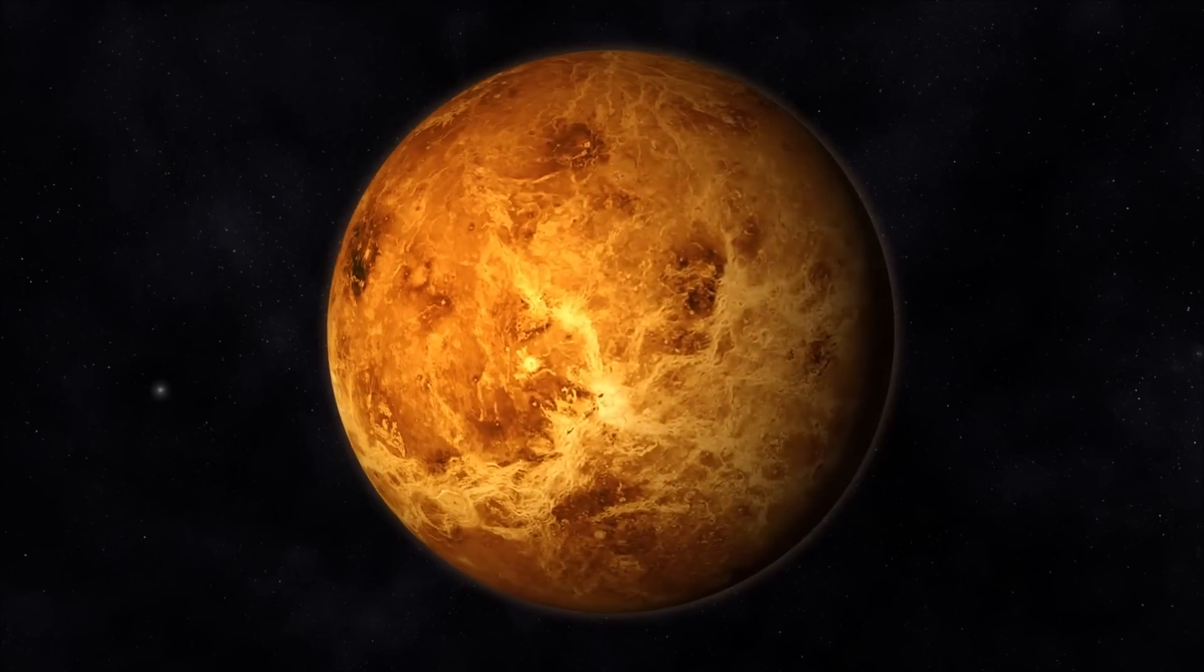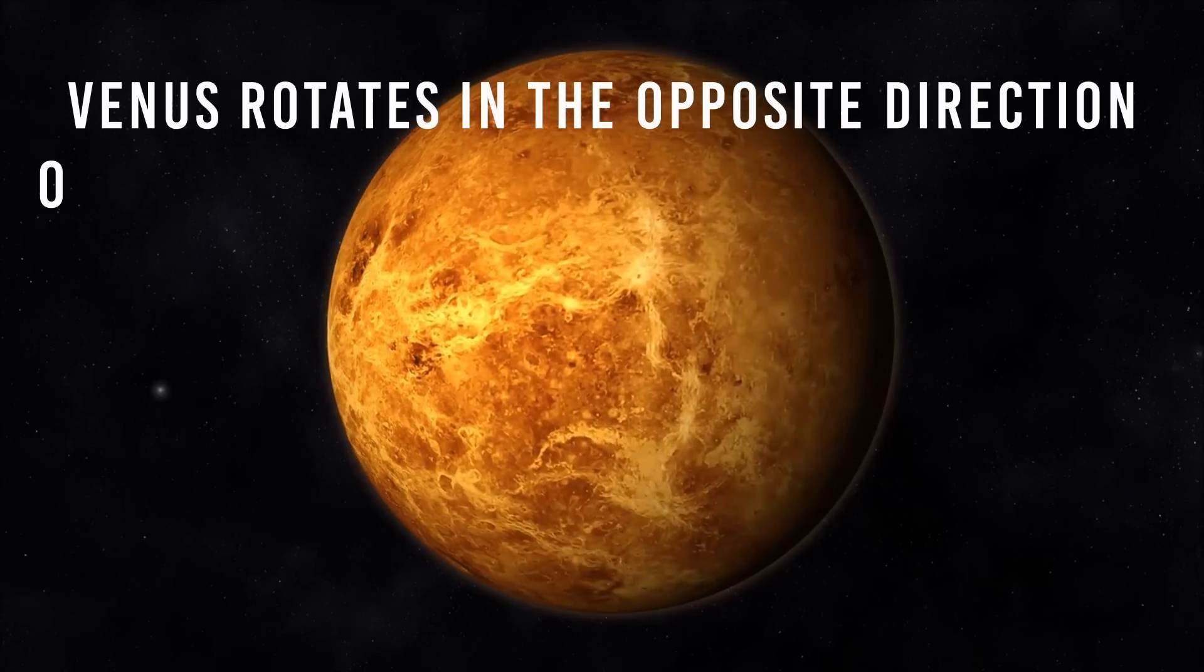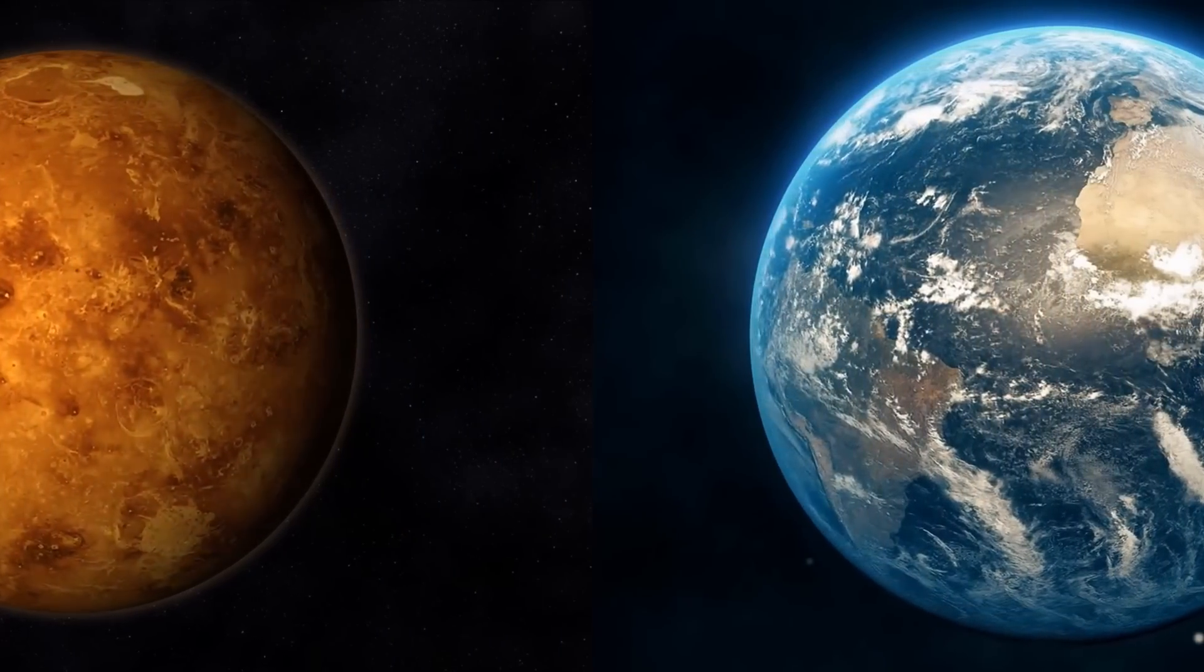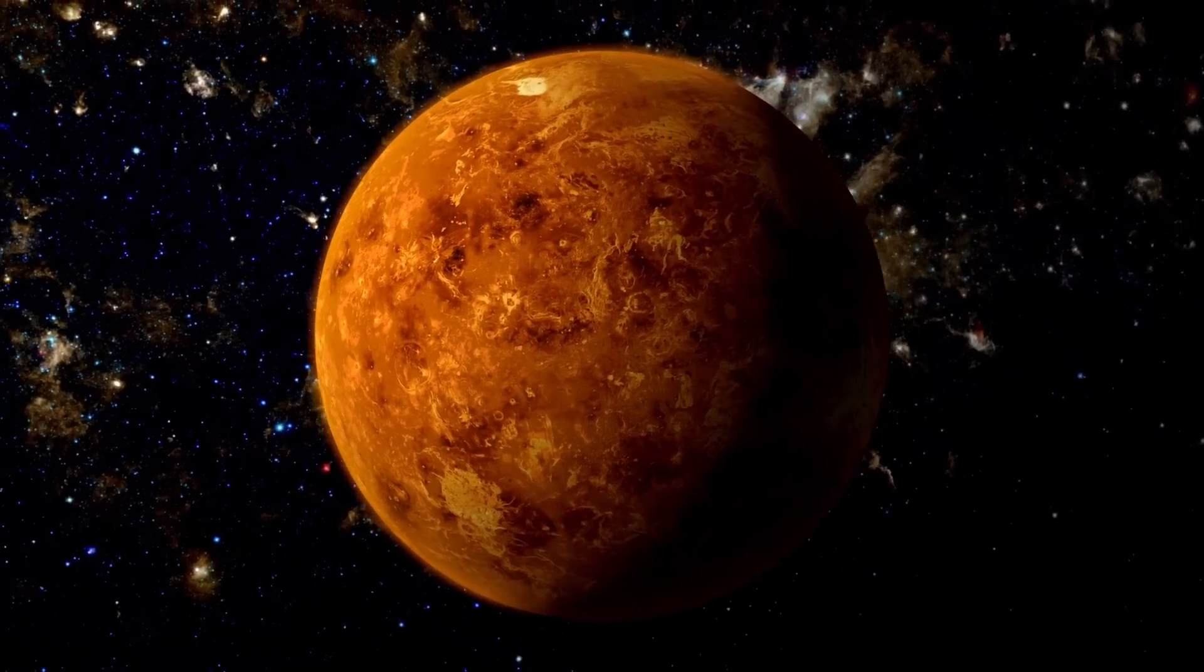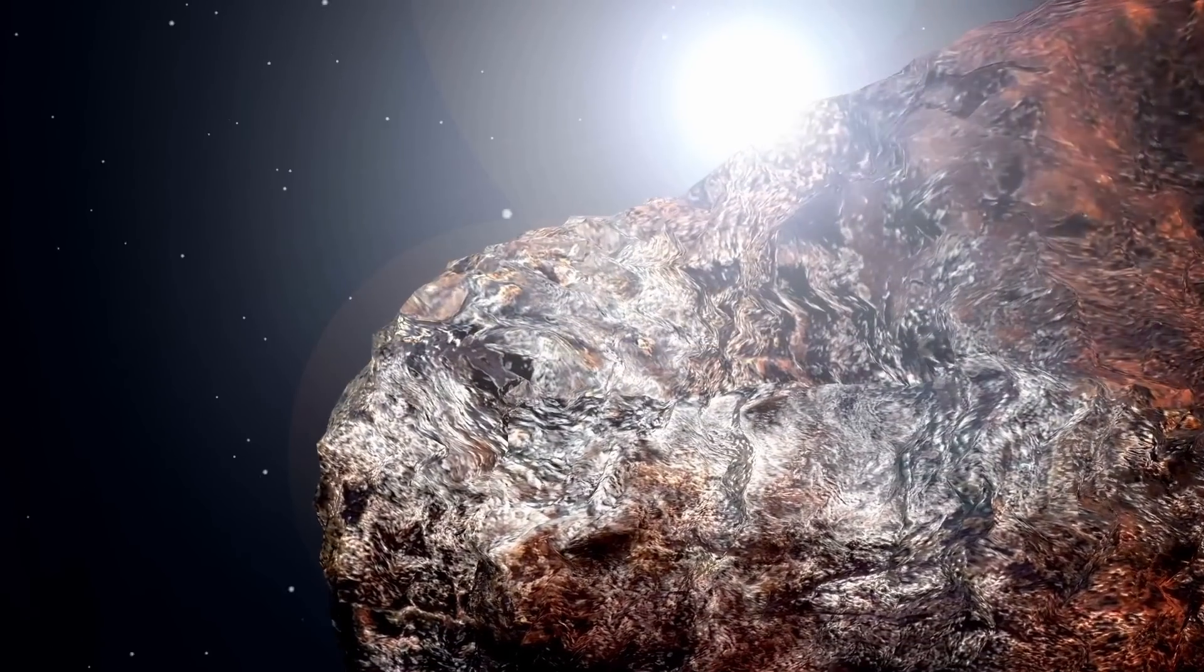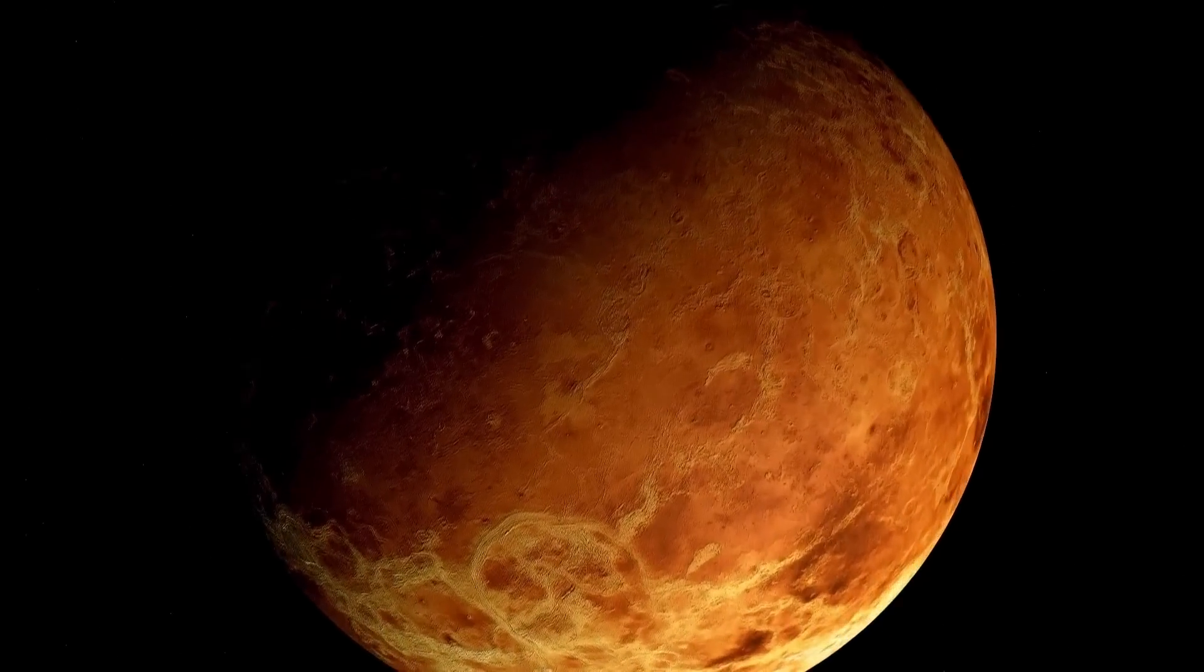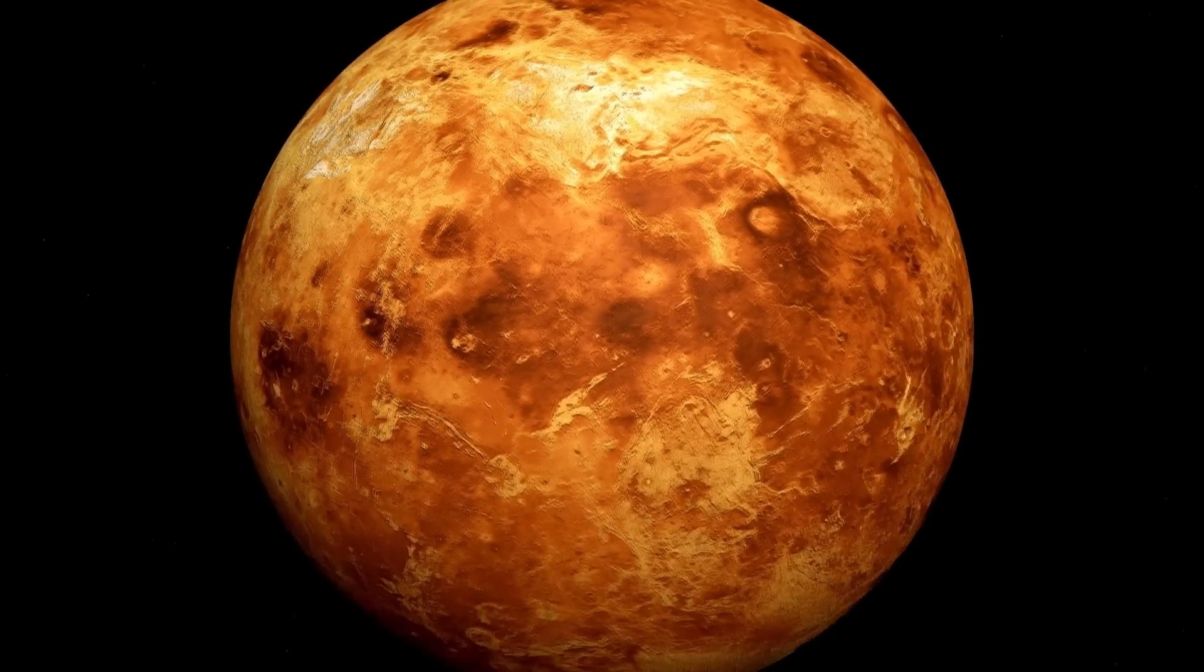In addition, Venus's rotation is retrograde, meaning that it rotates in the opposite direction of most other planets in our solar system, including Earth. One theory for the origin of Venus's slow and retrograde rotation is that it was caused by a massive impact during the planet's early history. This impact could have been large enough to completely stop Venus's rotation and then reverse it, causing the planet to spin in the opposite direction.